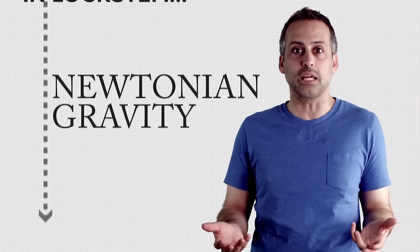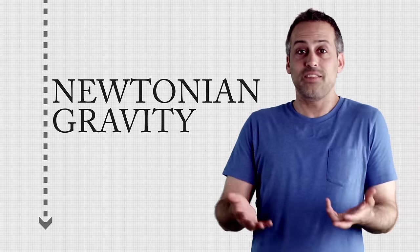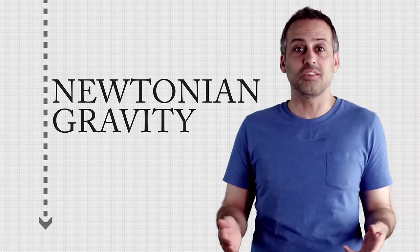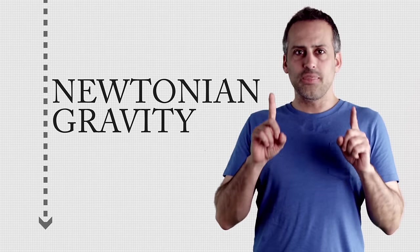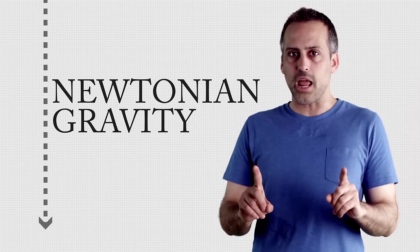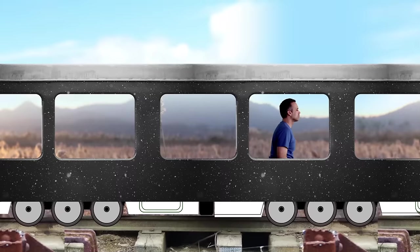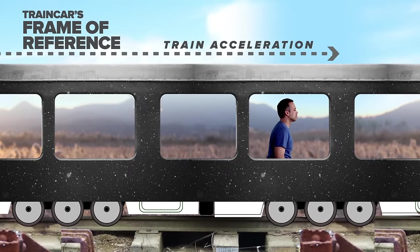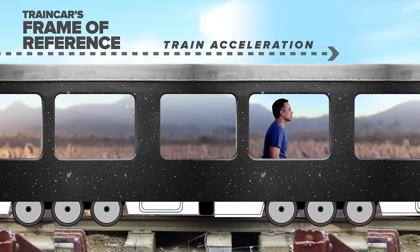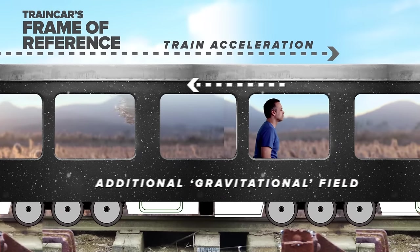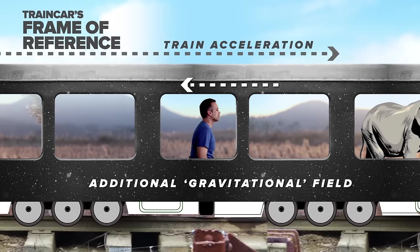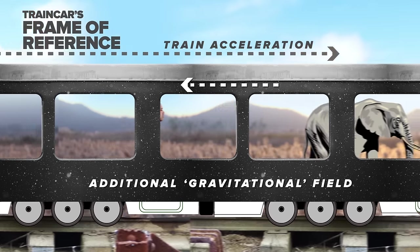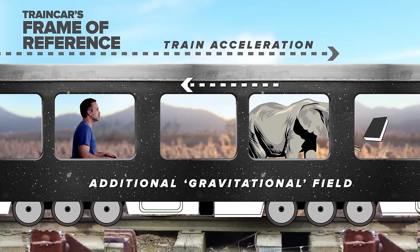There's something else familiar that makes people, books, and elephants accelerate in lockstep: the Newtonian force of gravity. In fact, in the absence of air resistance, that's the defining feature of gravity. So in the train car's frame, which is accelerating forward, it's as if there's an additional gravitational field that points backward. Accelerated frames of reference mimic a gravitational field in the opposite direction of the frame's acceleration.